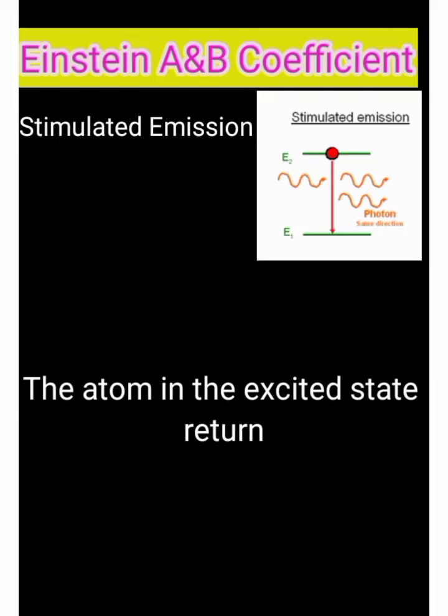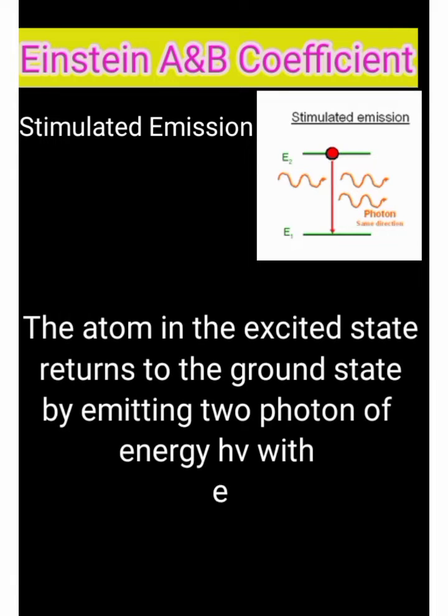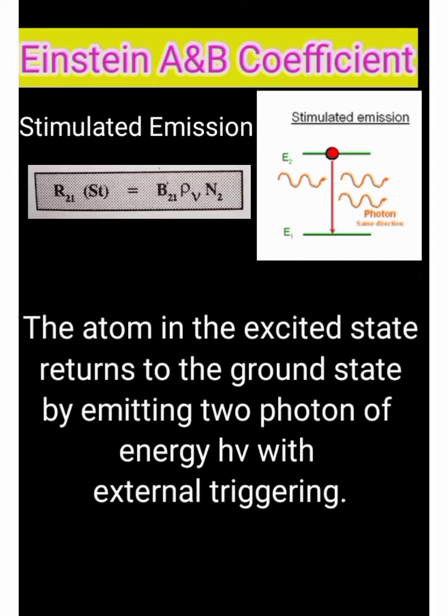Stimulated emission: The atom in the excited state returns to the ground state by emitting two photon of energy H nu with external triggering. It's called stimulated emission. For this equation R21 is equal to B21 rho nu into N2.